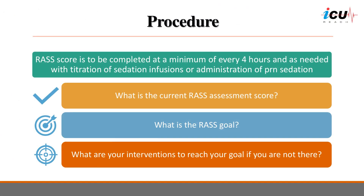The RASS score should be completed at a minimum of every 4 hours, and additionally as needed, with titration of sedation infusions or administration of PRN sedation. Start by determining the current RASS assessment score, then establish the RASS goal, such as minus 1 or minus 2 for light sedation. If the current score doesn't meet the goal, adjust the sedation level up or down to achieve the goal, then reassess the RASS score to ensure adequate sedation.